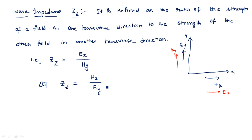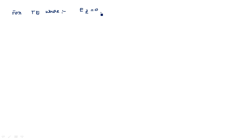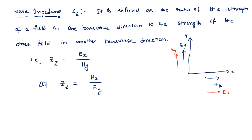Now let us calculate the wave impedance for the TE wave. TE stands for transverse electrical, meaning Ez equals zero and Hz is a non-zero value. To find Z_TE using the definition Z = Ex/Hy, we need the expressions for Ex and Hy taken from the propagation of waves in a rectangular waveguide derivation.